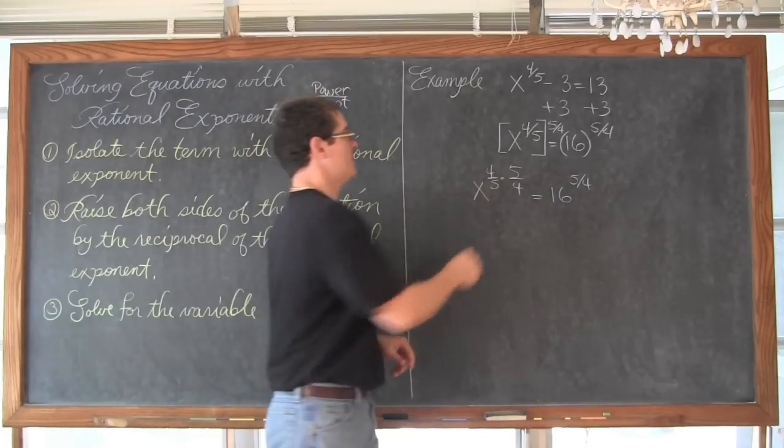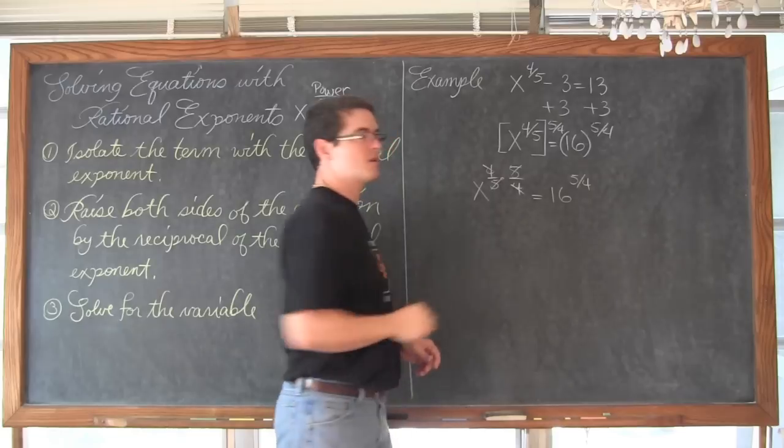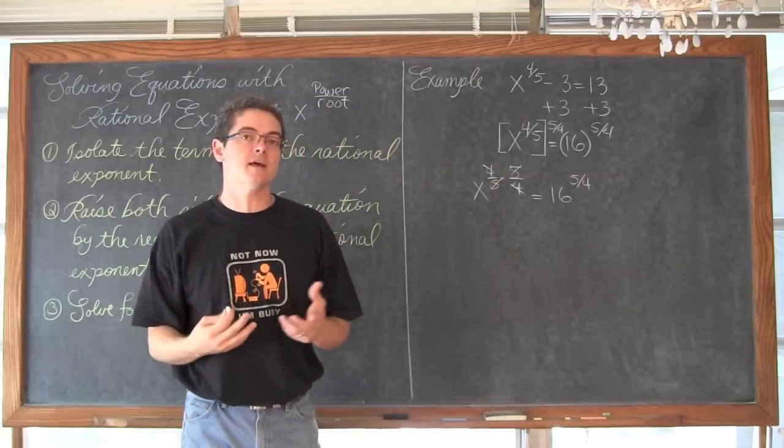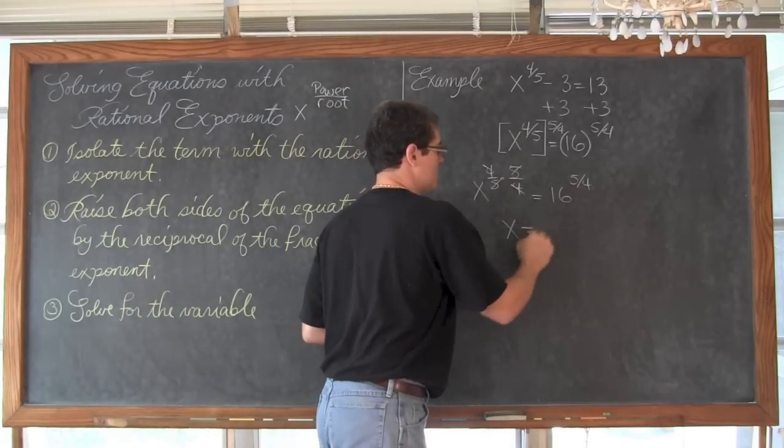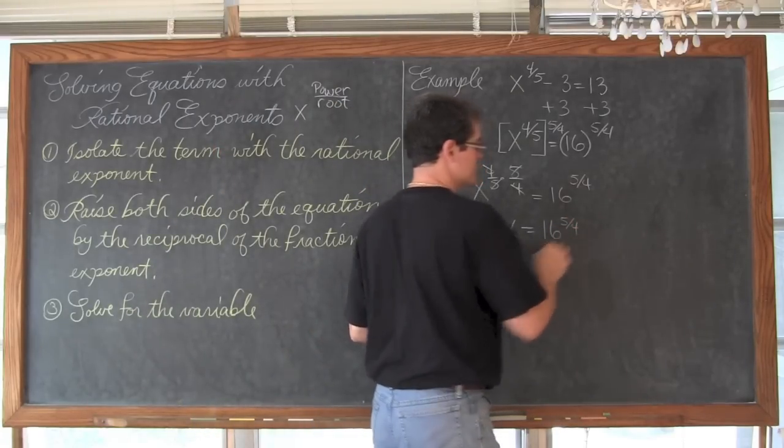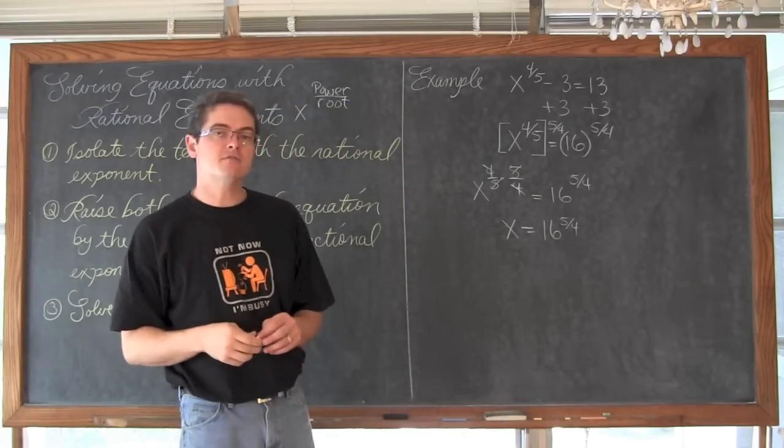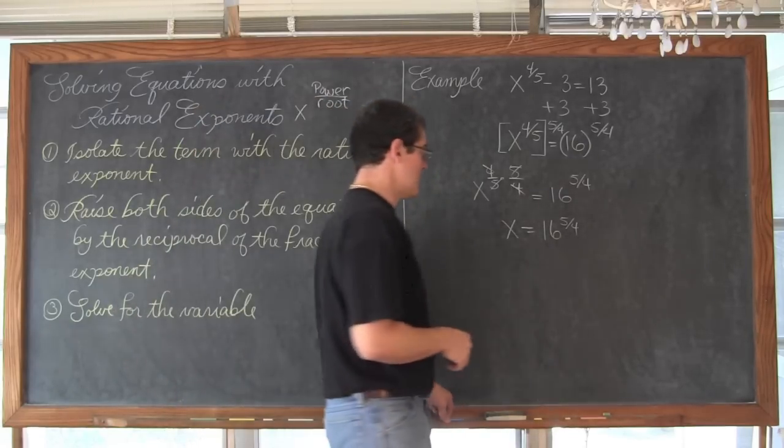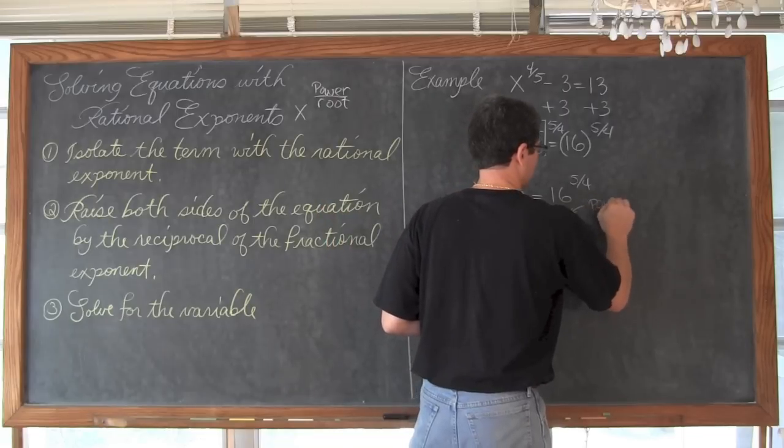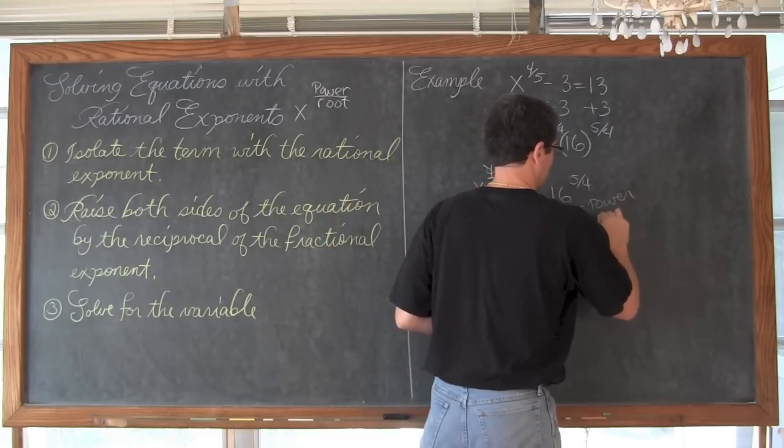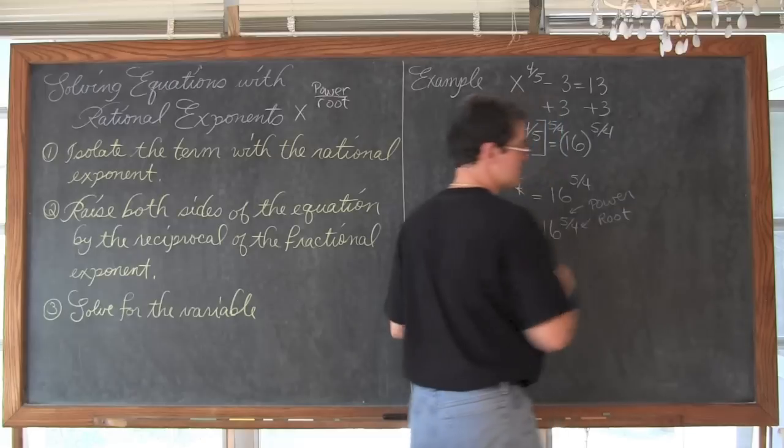These fives and these fours are going to cancel out, giving us that exponent of one that we need, effectively canceling it away. So we have x equals 16 to the five-fourths power. Now let's not forget with fractional exponents the top number is our power, and the bottom number is our root.